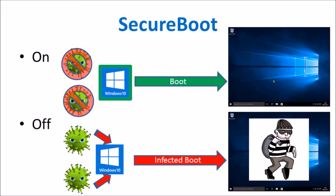Secure Boot, however, is sadly widely misunderstood. Linux enthusiasts thought it was a Microsoft-based technology to lock out Linux installations. Microsoft have worked with the Linux community to allow Ubuntu, Mint, and Fedora, for instance, all to pass Secure Boot. Microsoft have also worked together with the vendors of some popular utilities such as Acronis True Image and Macrium Reflect, and these utilities will now also pass Secure Boot.